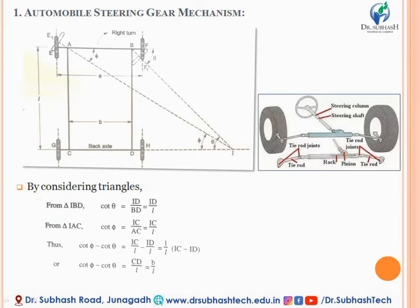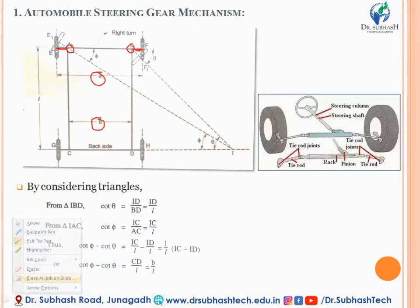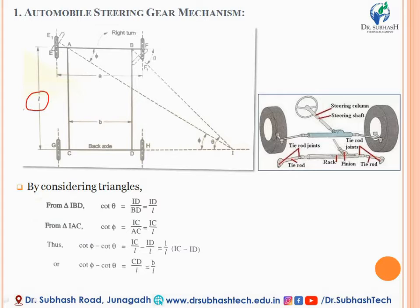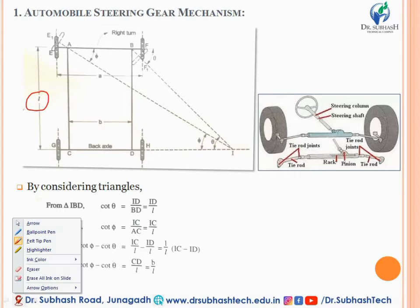The tie rod, rack and pinion, and some gear mechanisms are also introduced for the steering gear mechanism. For the mathematical analysis, small 'a' stands for the width of the front wheel track between A and B, small 'b' stands for the width between the two pivoting points A and B, and small 'l' is the wheelbase — that is, the distance between the center of the front and rear wheels.